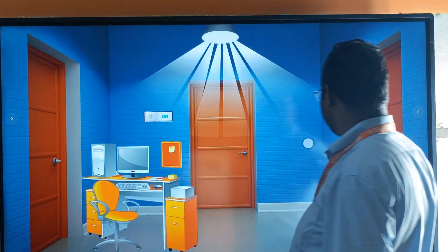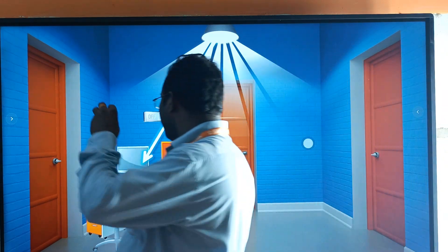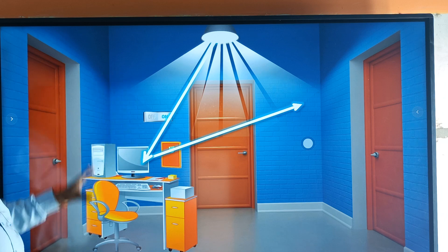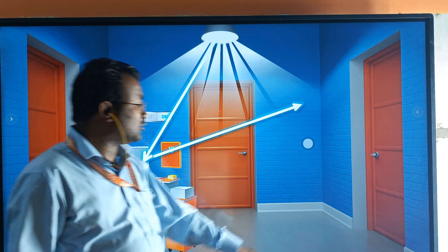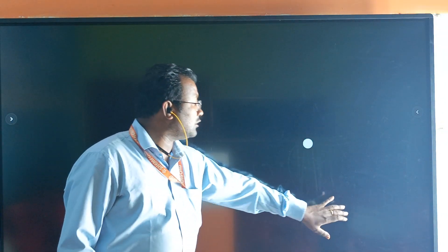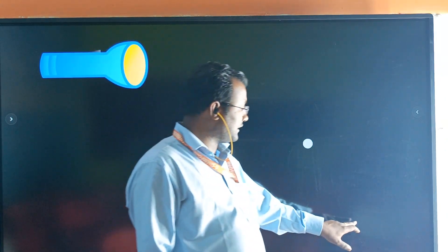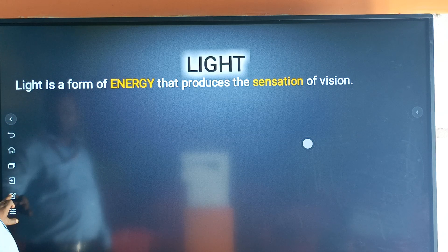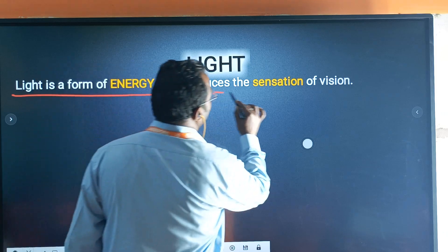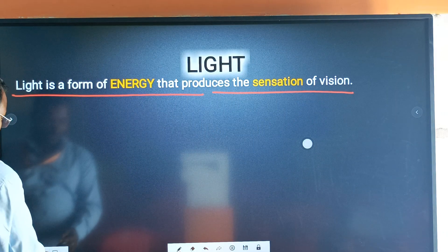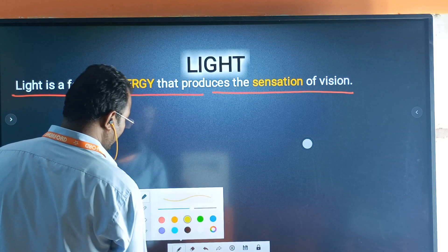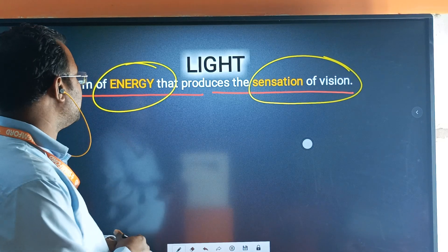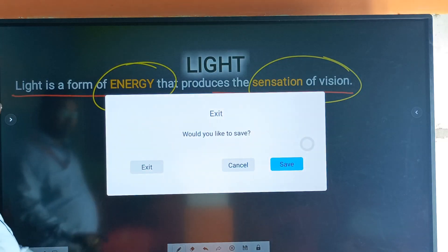Just changing the color so that it will be more visible to you also. Light is a form of energy that produces the sensation of vision. That means we are able to see the thing due to this energy that is called light. Light ke kaaran hum cheez ko deekh paate hain.